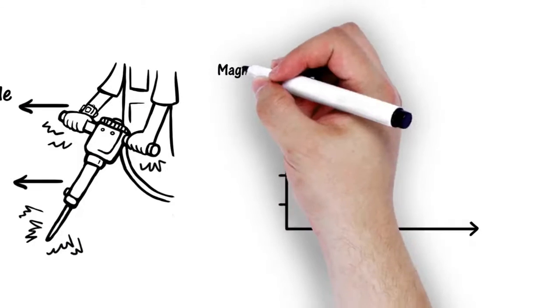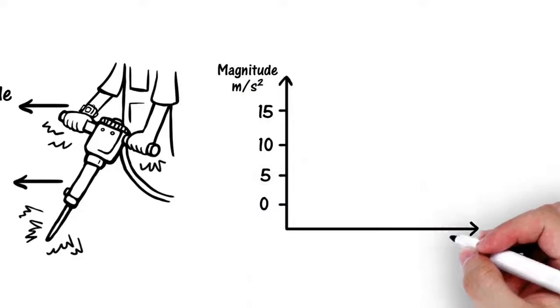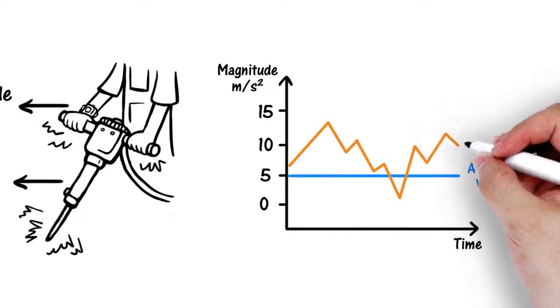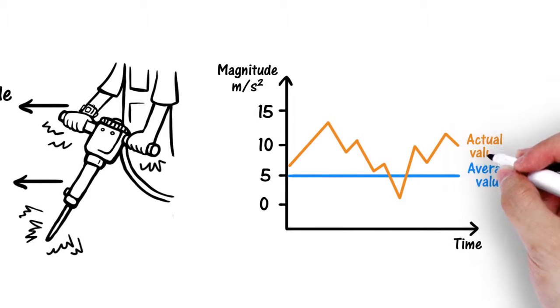Using the sensed wrist vibration to calculate HAVS risk exposure points can provide a more representative assessment of risk from the tool use in the field. This personalized exposure assessment helps employers reduce exposure risk based on truly representative vibration exposure data.